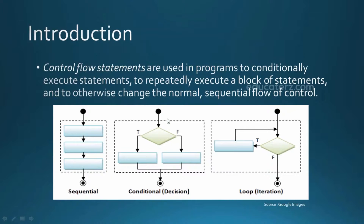If you look at the second image, you can see how a conditional statement works. When your code reaches the condition, if the condition is true it executes one particular piece of code, and if it is false it executes another piece of code. Based on the decision made at that condition, your code acts differently — if it's true it acts one way, and if it's false it acts another way.